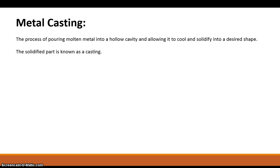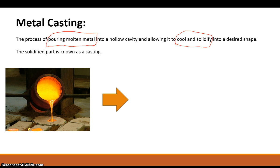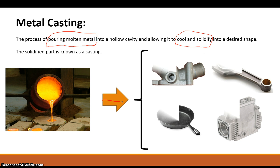Now, again, start off with our original definition of metal casting. It is the process of pouring, and here's an important part, molten metal, so the metal is in a liquid state, into a hollow cavity and allowing it to cool and solidify into a desired shape. The solidified part is known as a casting. So again, we're going from a liquid metal, molten metal, and we're trying to get it to solidify. This arrow just represents solidification and getting it to its final shape.